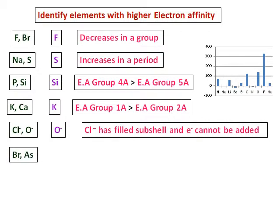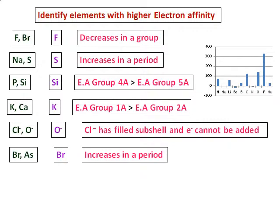Between bromine and arsenic, bromine will have higher electron affinity because electron affinity increases in a period.